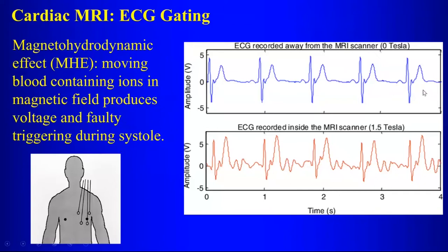Outside the MR, your ECG recording looks perfect. But as soon as you slide the patient into the tunnel, you get all of these irregularities in the tracing, and the software has a very hard time trying to figure out which one is an R wave, which can lead to artifacts when you try to reconstruct your images.